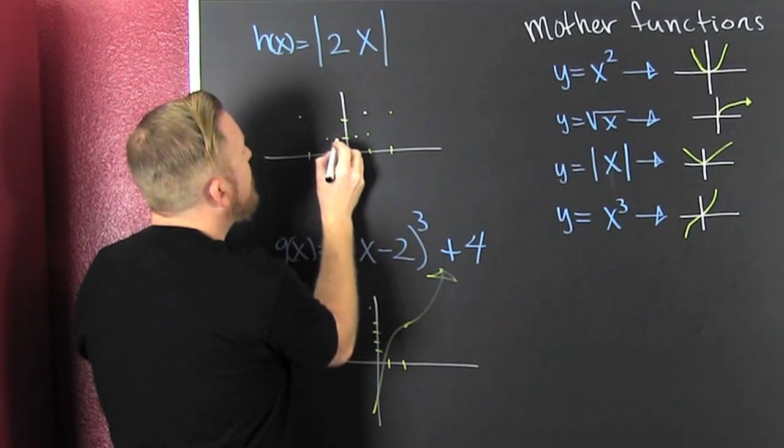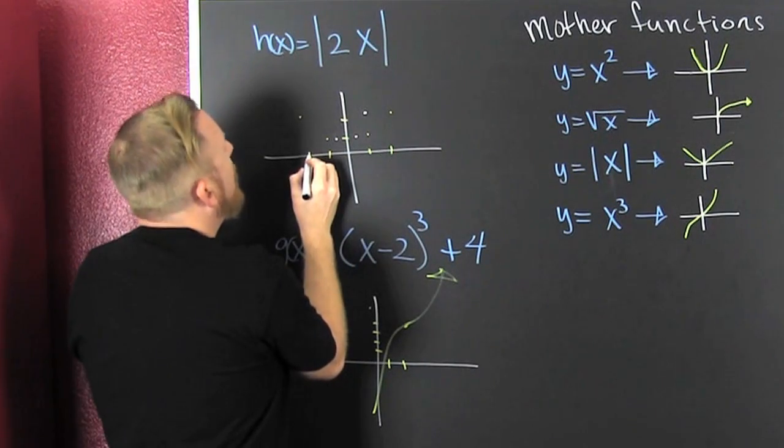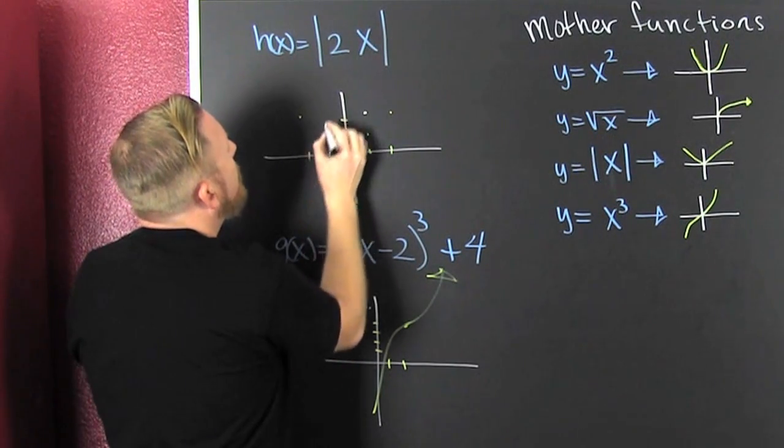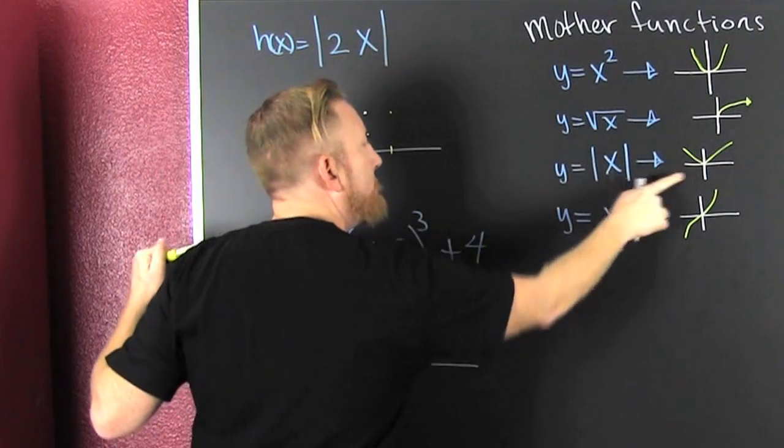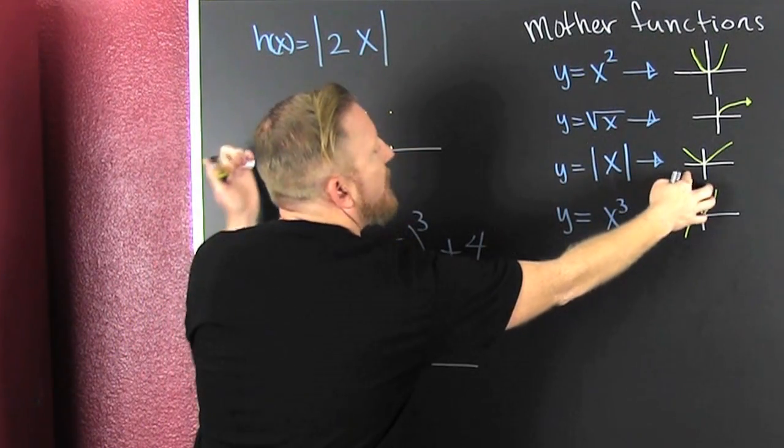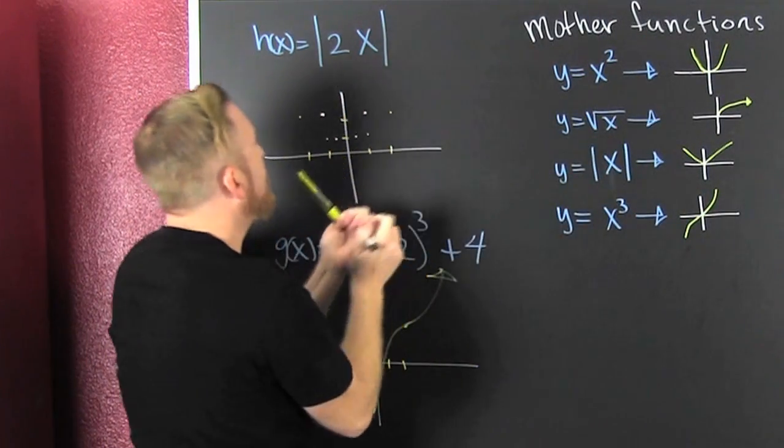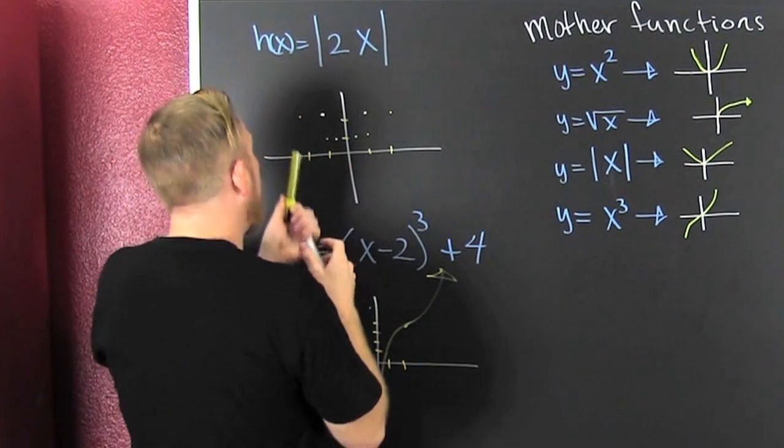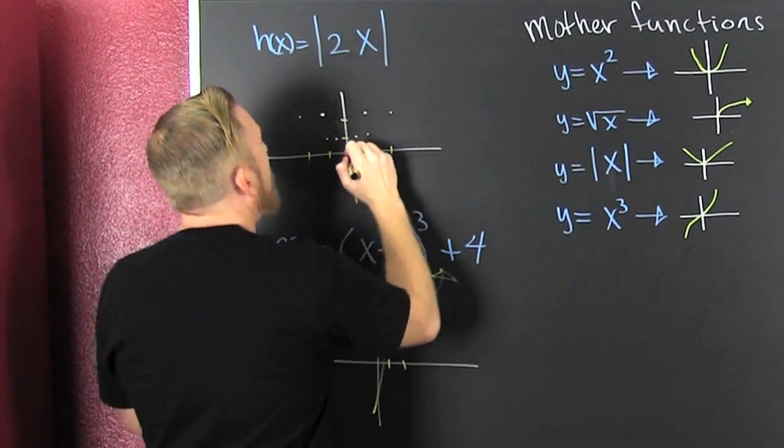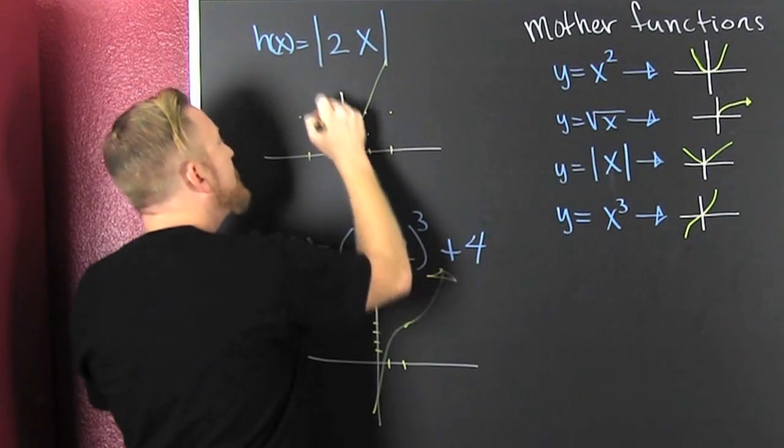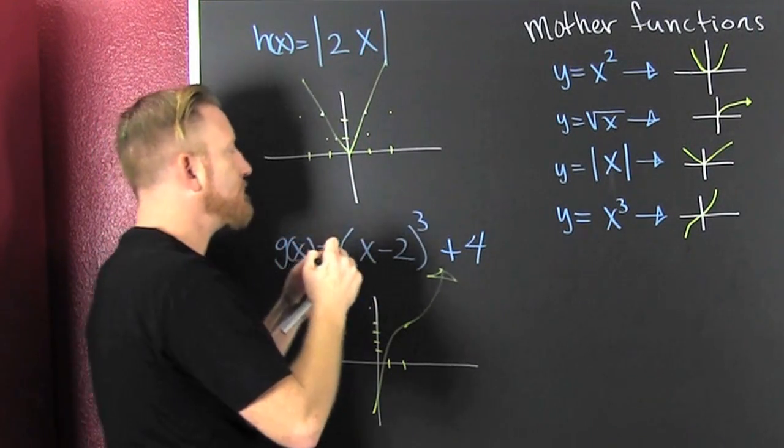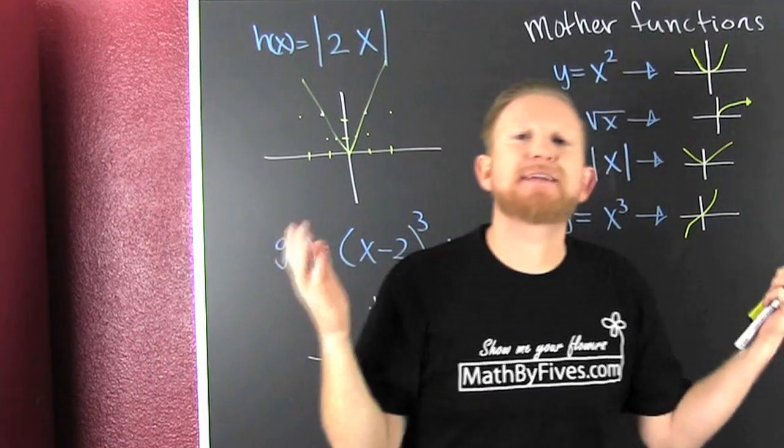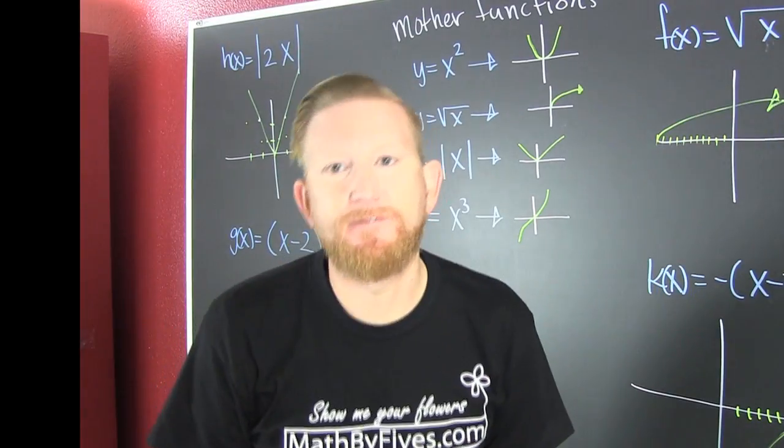If it was 1 on the x, then it's 1/2. If it was 2, then it's 1. So we take that mother function and squeeze it - half the x size, which is double the y size. That's what you do with that mother function.